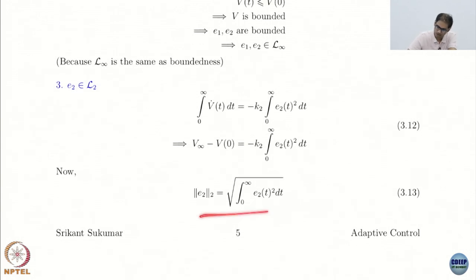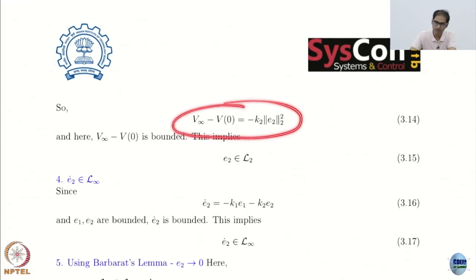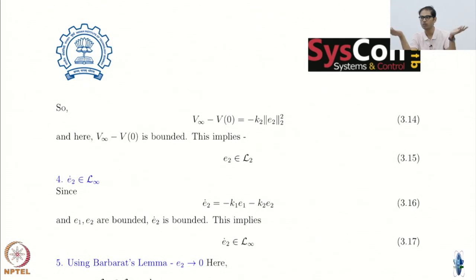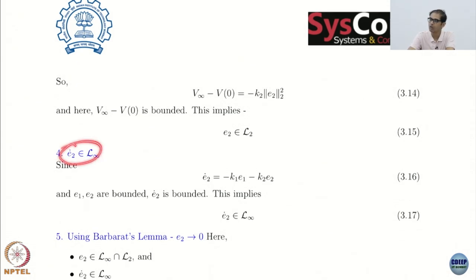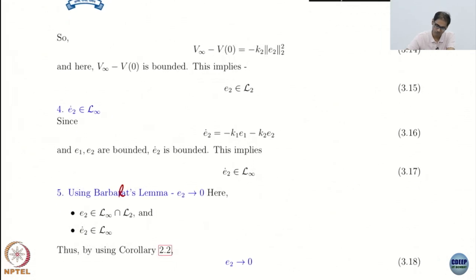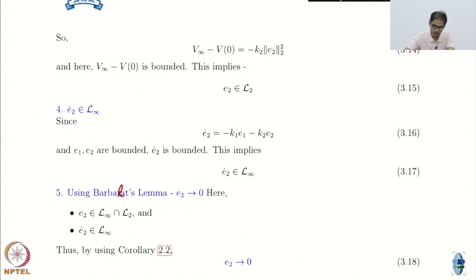Step 4: E2_dot is also bounded. Since E1 and E2 are bounded and k1, k2 are constants, E2_dot is clearly bounded. I can now apply the corollary to Barbalat's Lemma on the signal E2: E2 is in L∞ and L2, and E2_dot is in L∞. Therefore, by the corollary to Barbalat's Lemma, E2 goes to 0. So whatever appeared in V_dot goes to 0.